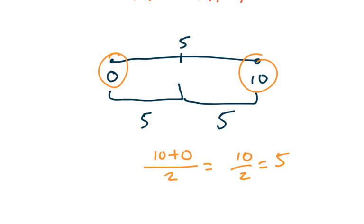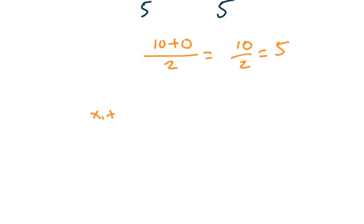So the formula for the midpoint is x1 plus x2 divided by 2, comma, y1 plus, sorry, let me rewrite it, y1 plus y2 divided by 2. This formula right here is just the average of the x's and the average of the y's.